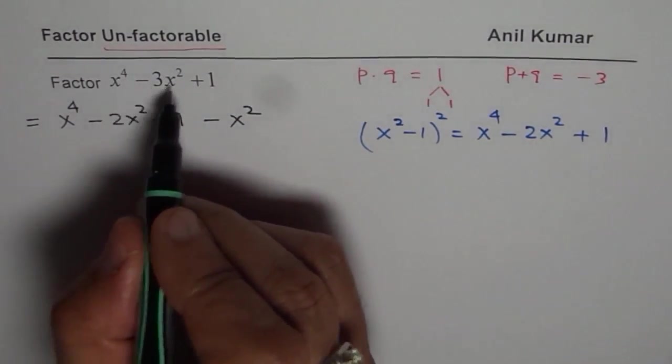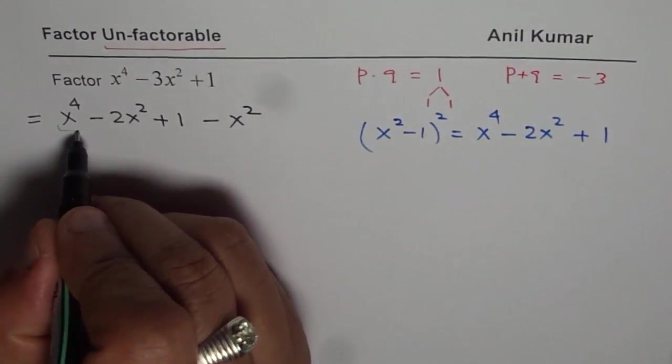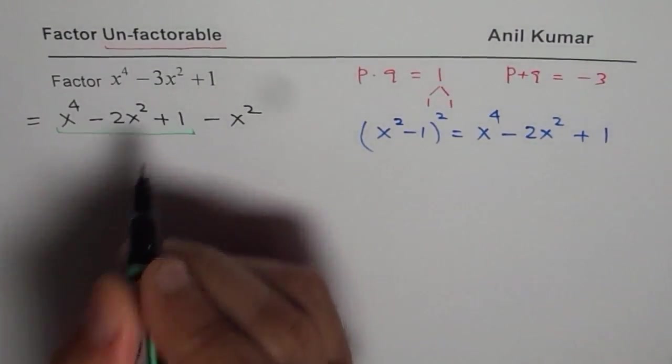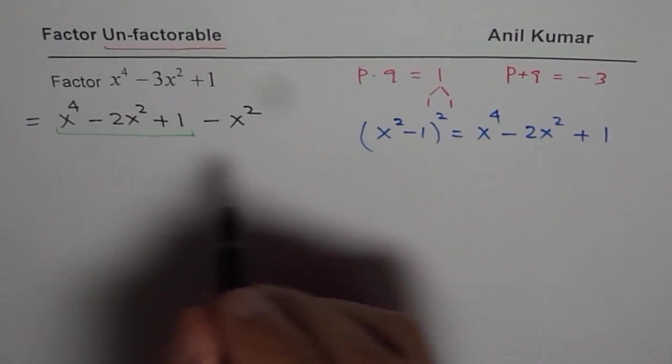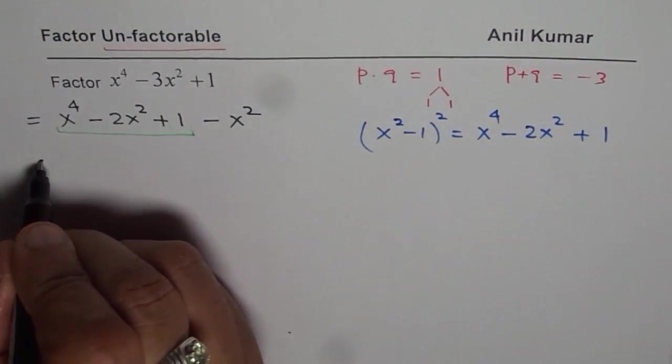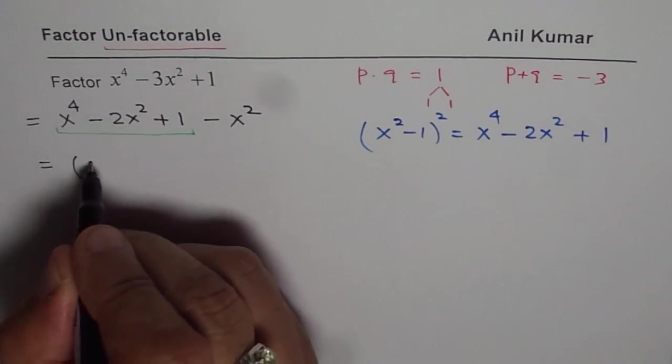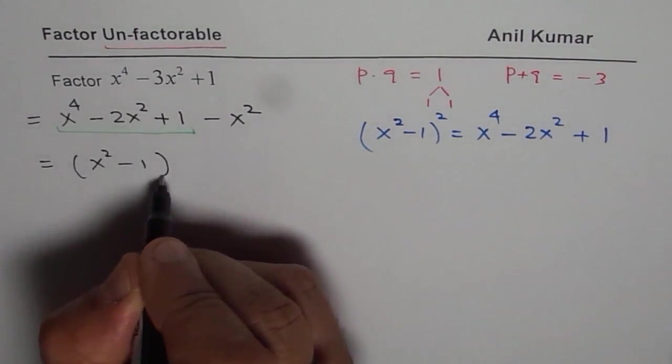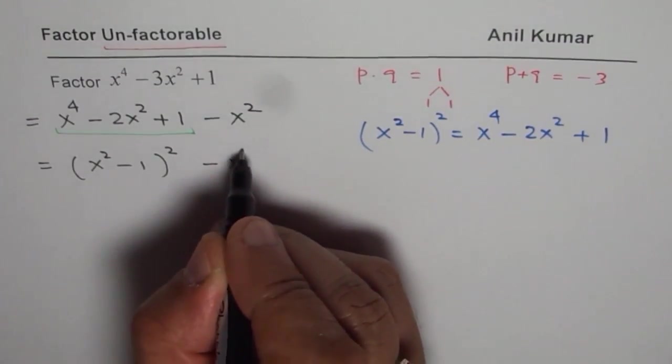But writing -3x^2 like this helps us to factor, since this trinomial can now be written as (x^2 - 1)^2. We can write this as (x^2 - 1)^2 - x^2. At this stage,